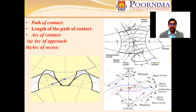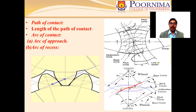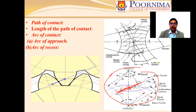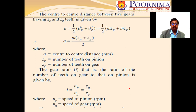The path of contact is the path traced by the point of contact of two teeth from the beginning to the end of engagement. The length of the path of contact is the length of the common normal cut off by the addendum circles of the wheel and the pinion. The arc of approach is from the start of contact to the pitch point, and the arc of recess is from the pitch point to the end of contact.